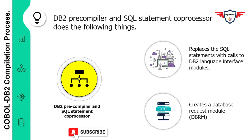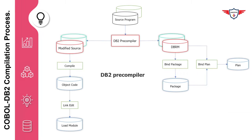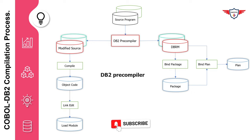Here is the complete flow diagram of the COBOL DB2 compilation process. At the top you have the source code — a COBOL DB2 program that includes SQL statements. When this source code is processed by a DB2 precompiler, it generates two outputs: first, a modified source code, and second, a Database Request Module. The modified source code does not contain any actual SQL statements because they have been replaced by the DB2 precompiler with equivalent calls to the DB2 language interface module.